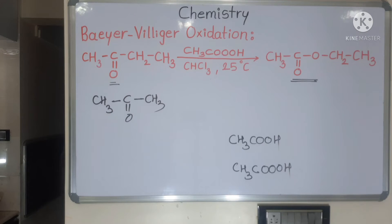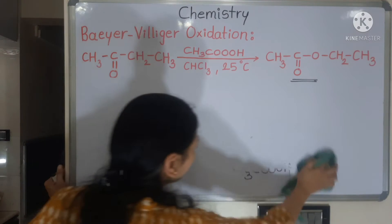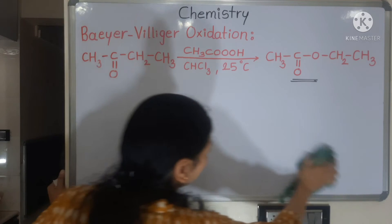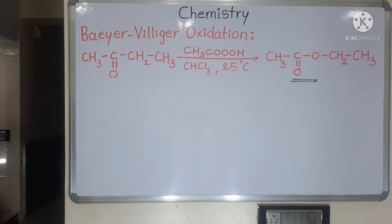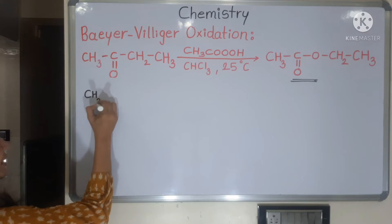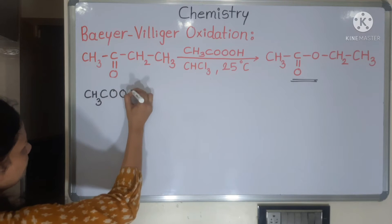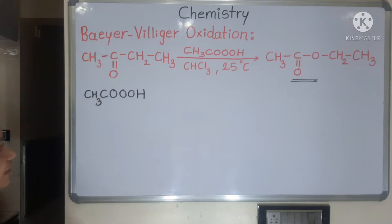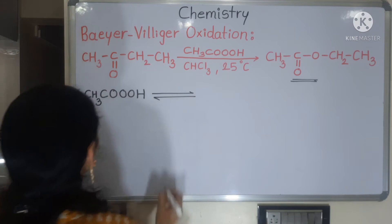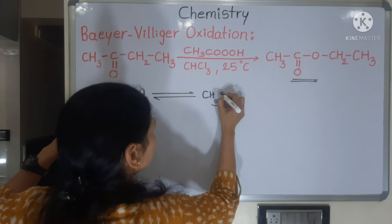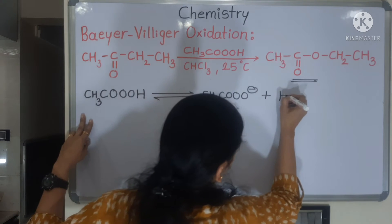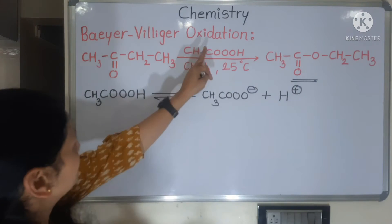Let's start with the mechanism for Baeyer-Villiger oxidation reaction. We have an unsymmetrical ketone as our reactant and our reagent is the peracid. The mechanism is very easy — it's a three-step mechanism. The first step is fragmentation of the peracid: CH3COO⁻ plus H⁺.